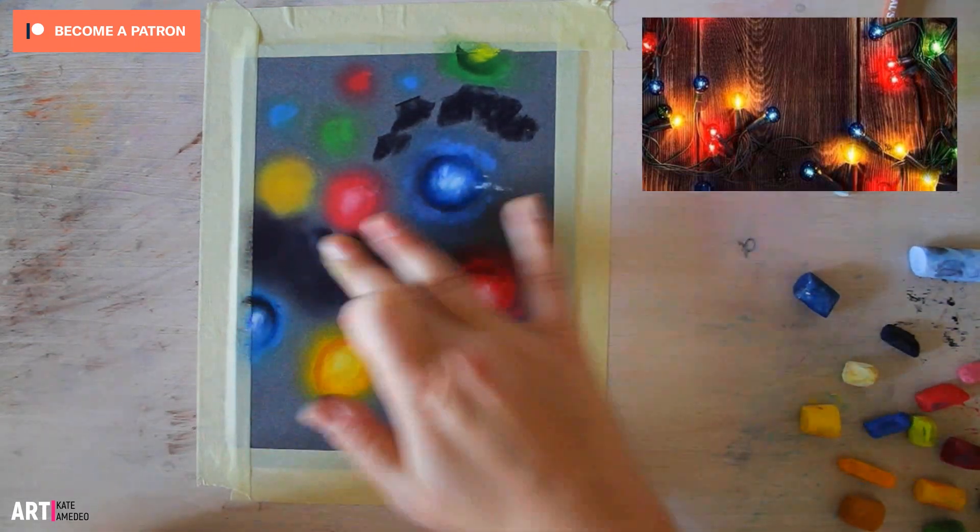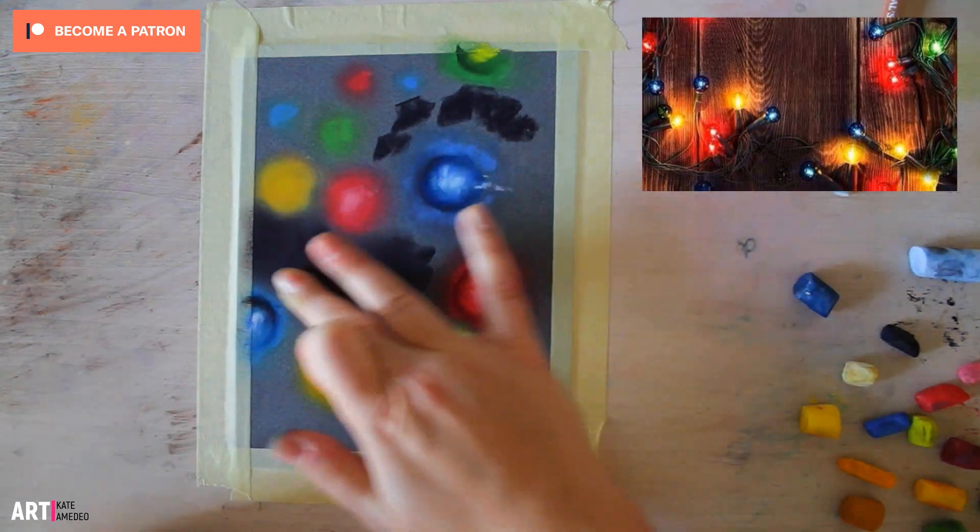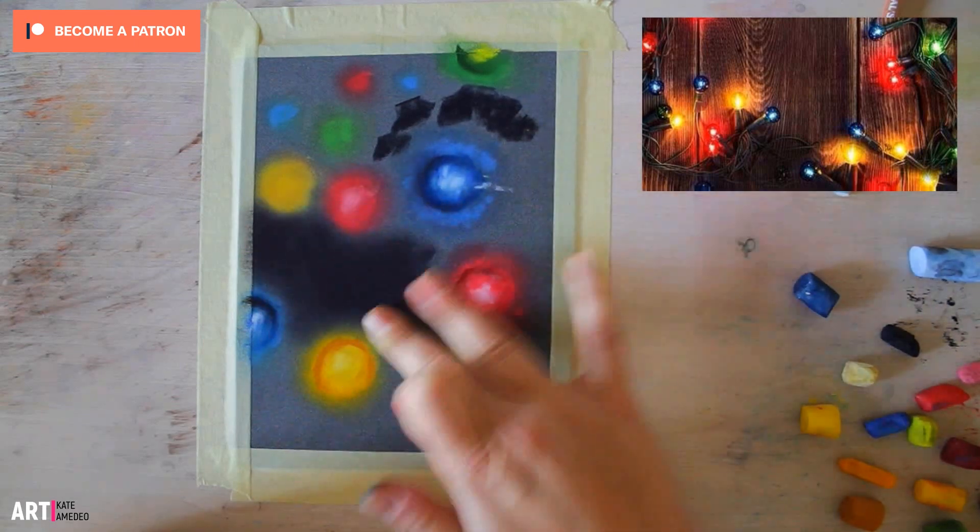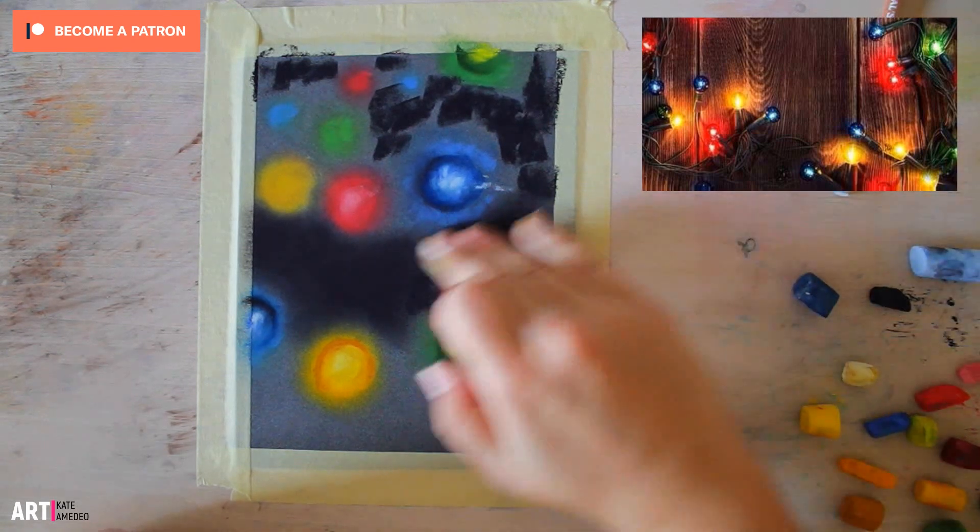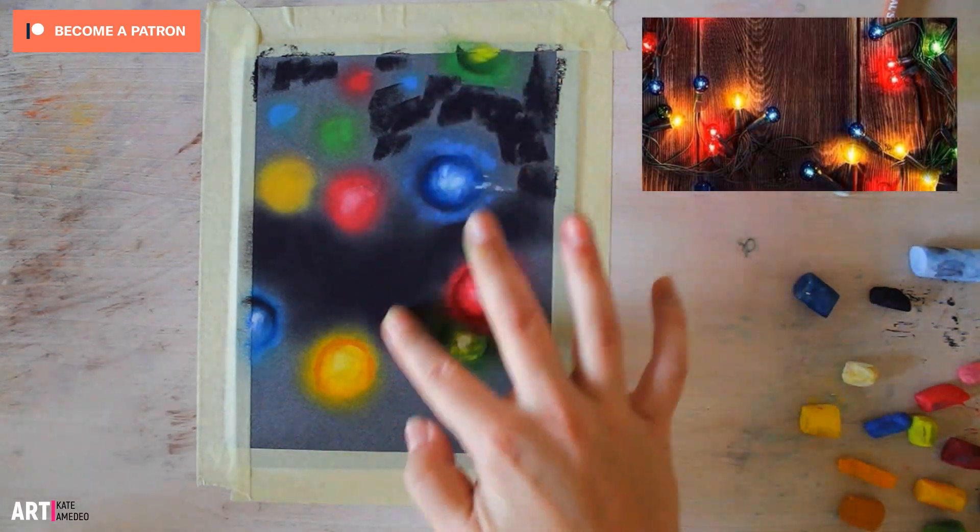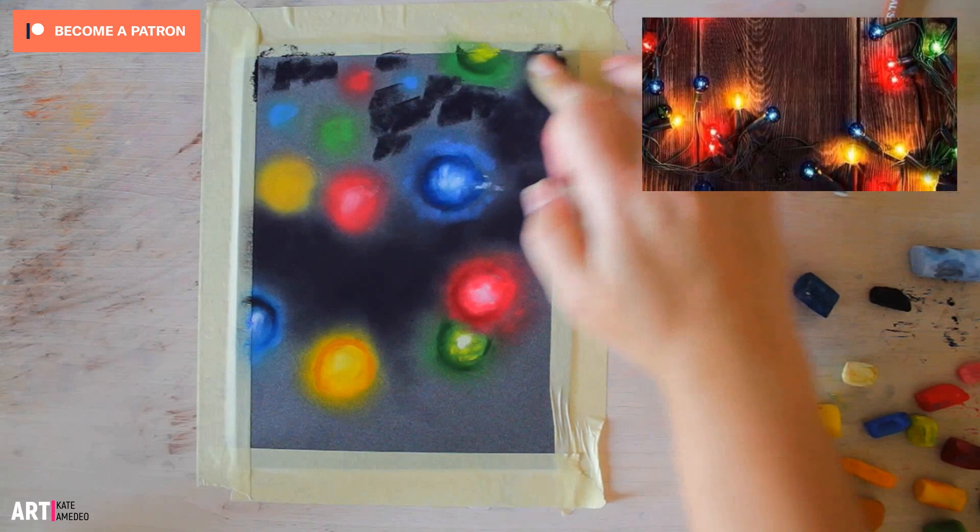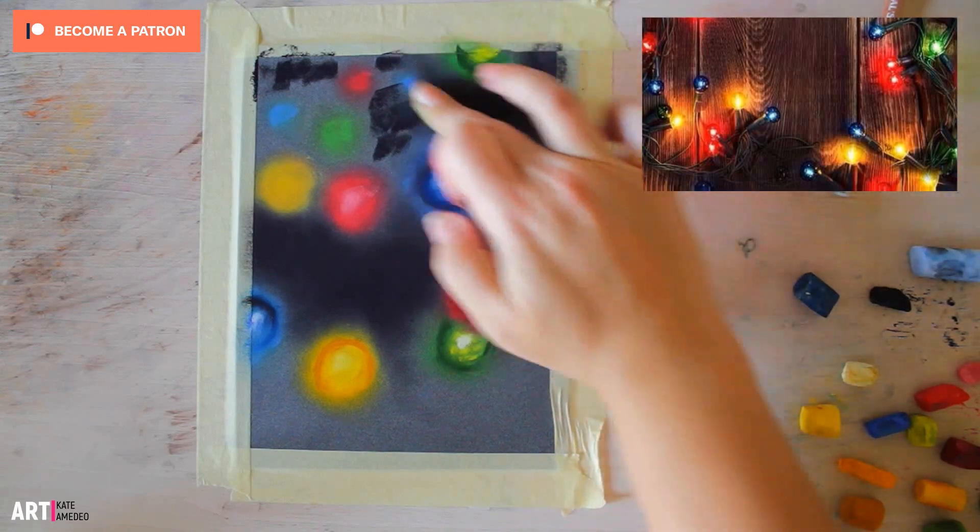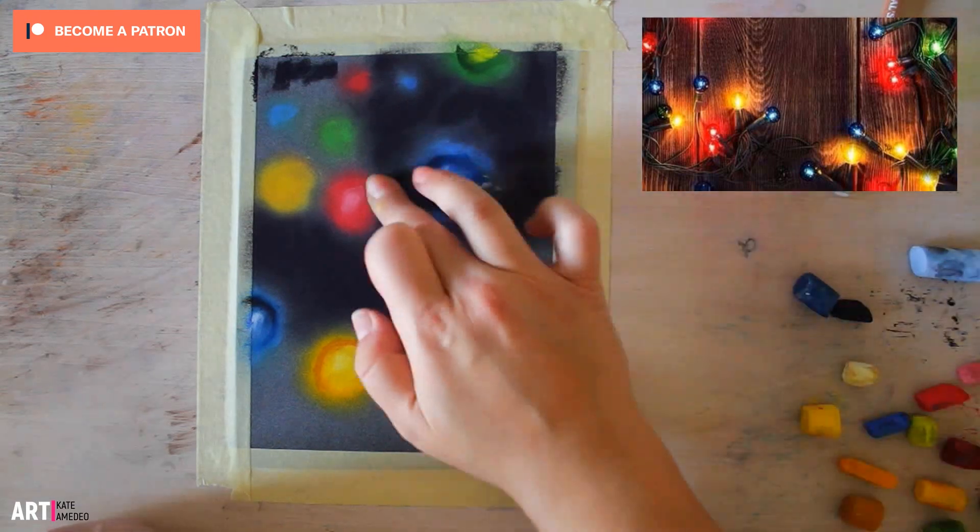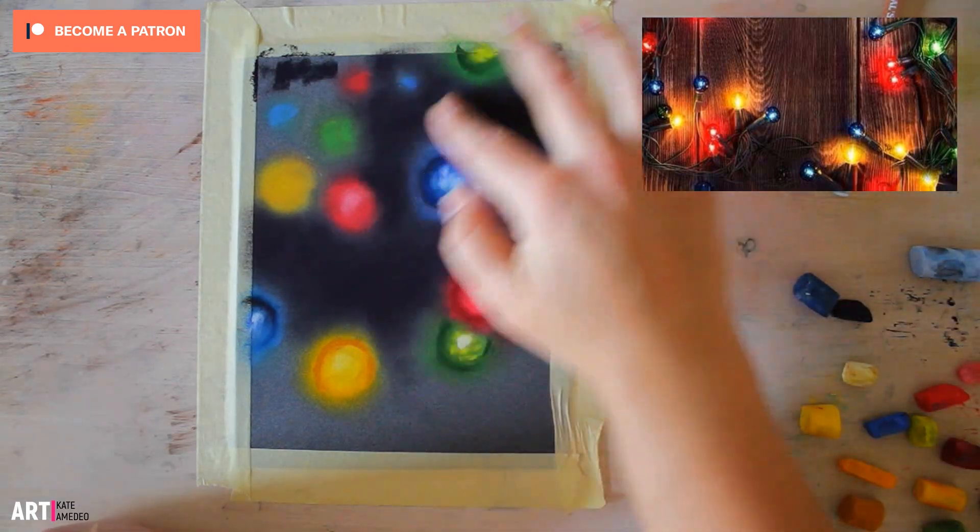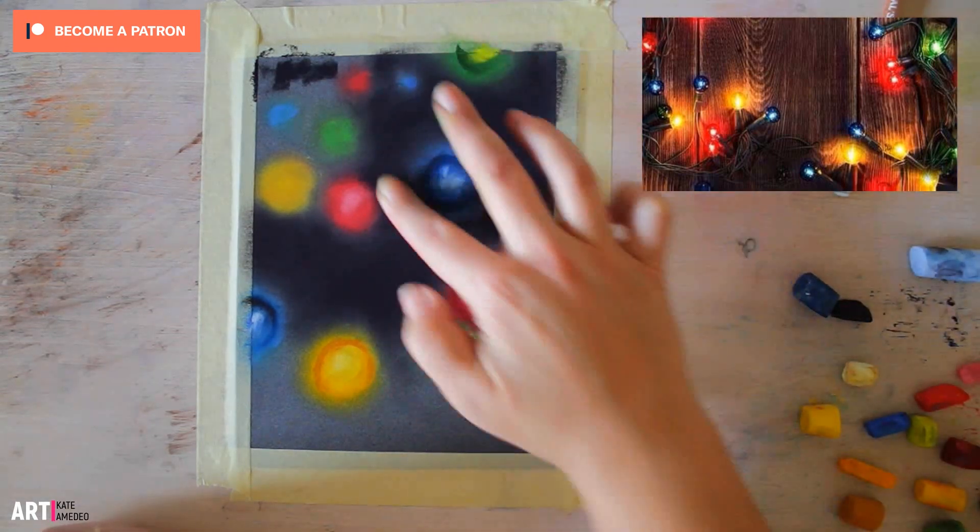And it blends out nicely in a way that it doesn't create this flat background, but it kind of suggests that there might be a room happening or maybe a Christmas tree or something actually happening around those Christmas lights. So it gives us the appearance of the night and maybe it's Christmas evening and the lights are glowing, but the room itself is dark.